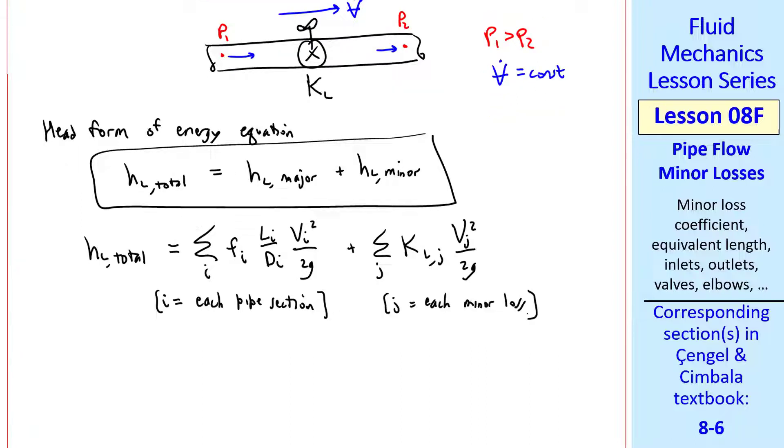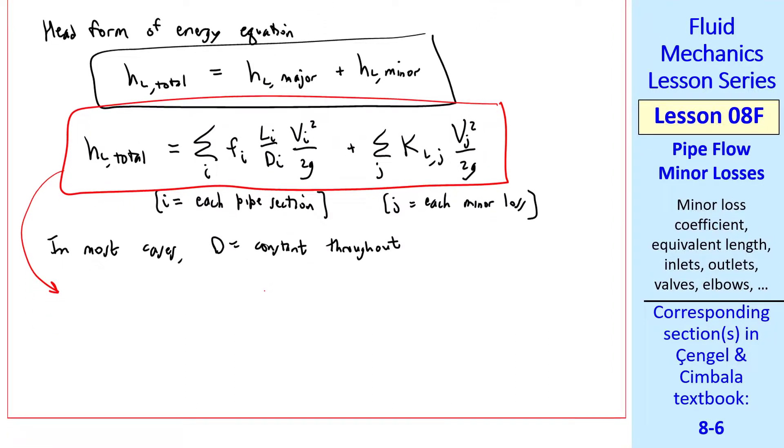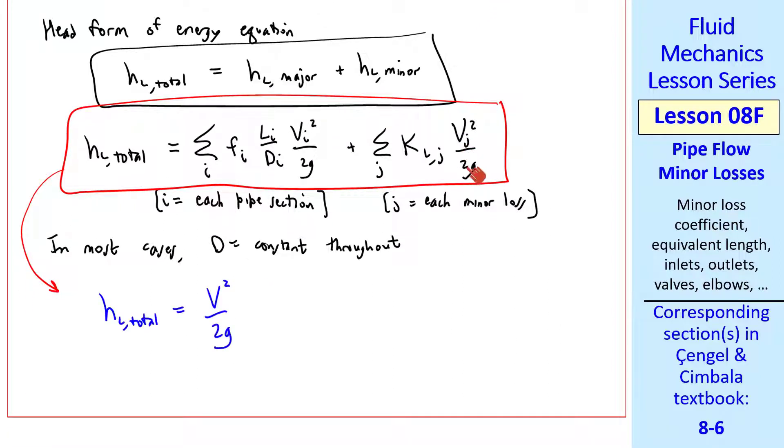In most cases we'll deal with d as constant throughout. So this general equation reduces to this simpler form, where we combine the v squared over 2g terms, since when d is constant throughout, v is also constant throughout.